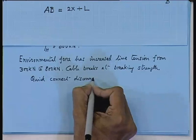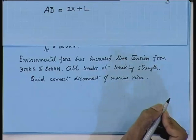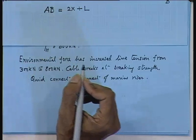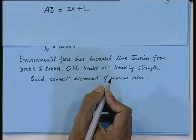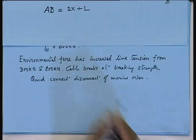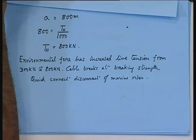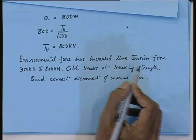In offshore situations — if you are located in the South China Sea or Gulf of Mexico — these are very dangerous conditions. In our case, we are getting an increase of 500 kilo Newtons. We started with 300 kilo Newtons, and just to make the line taut, we achieved an increase of 500 kN in the cable stress.